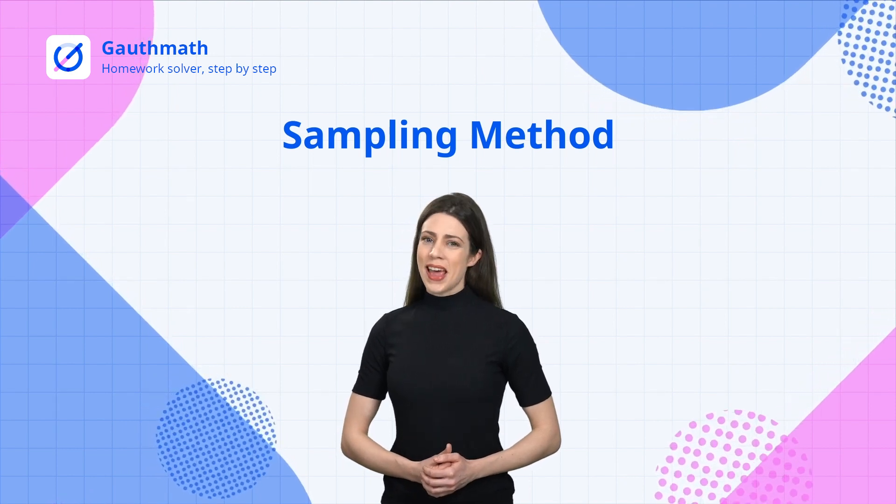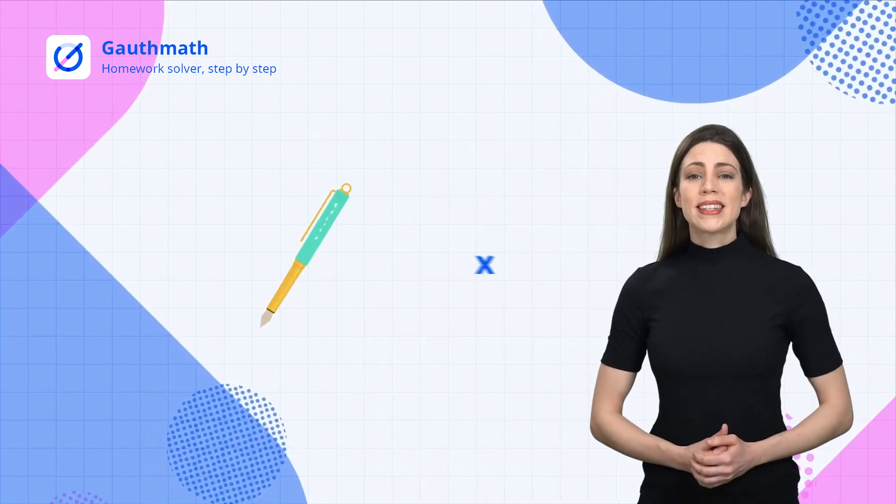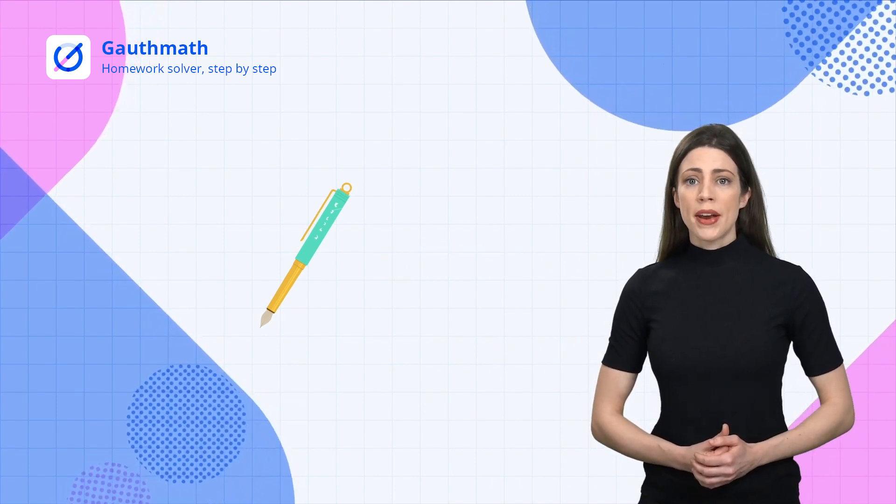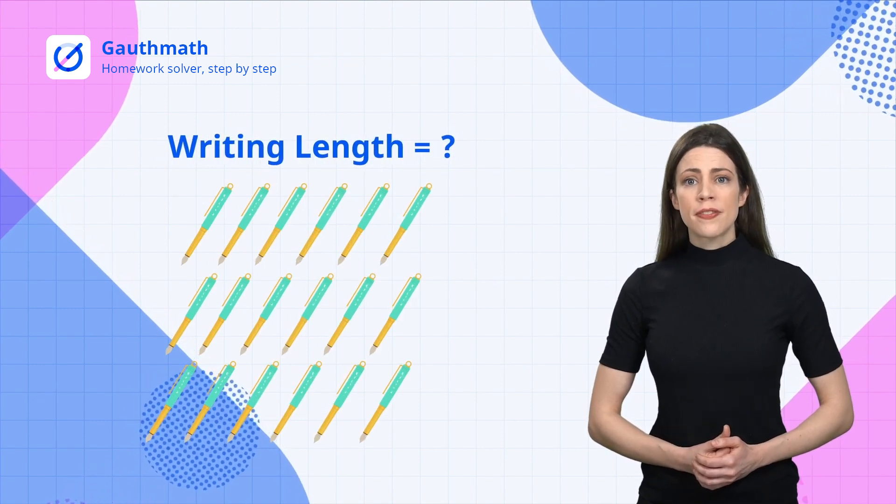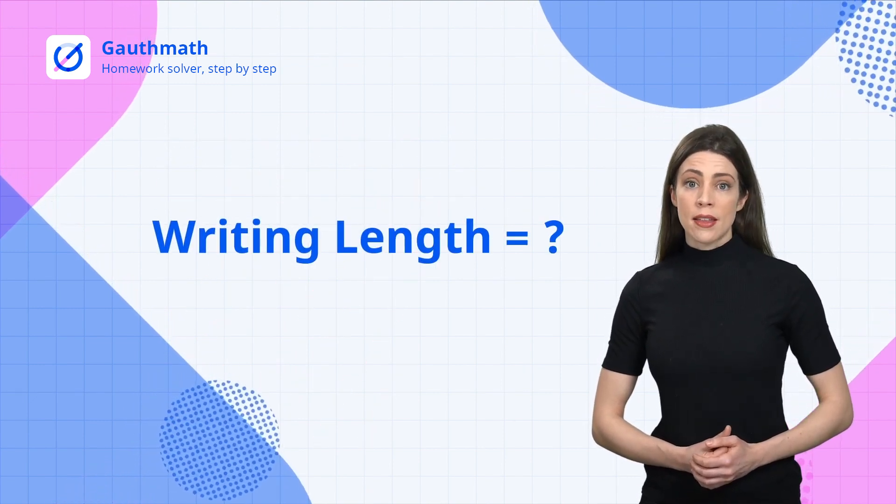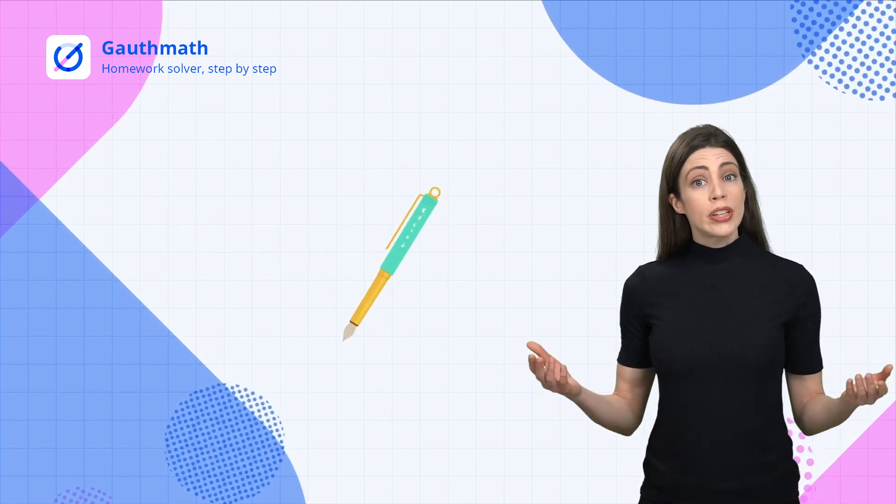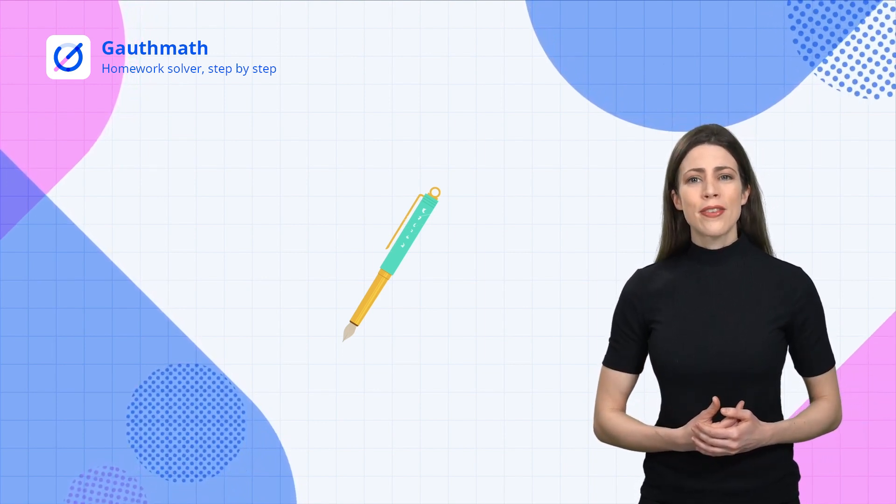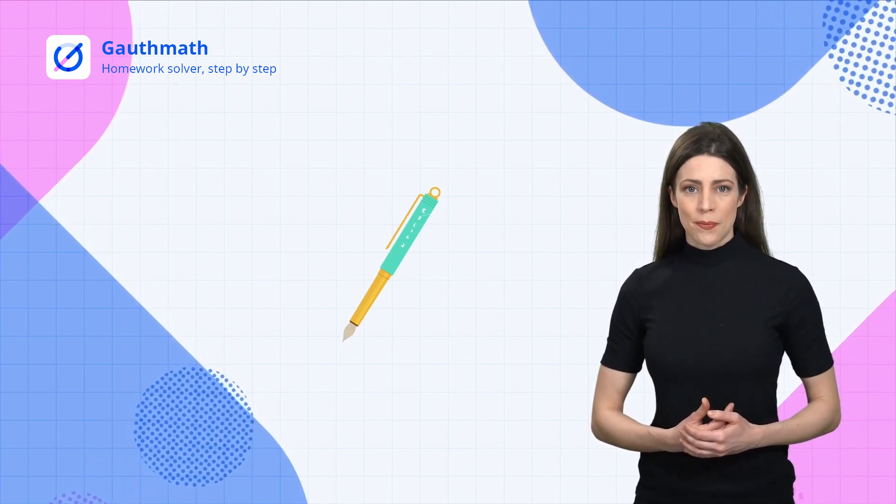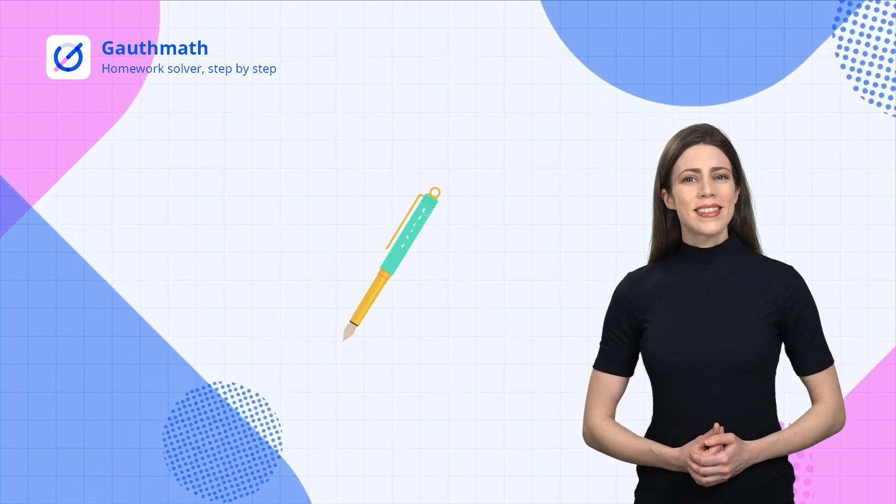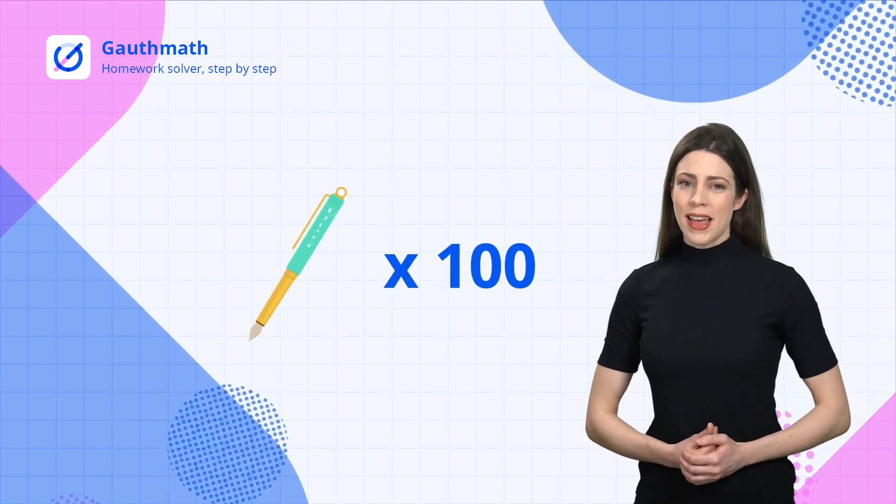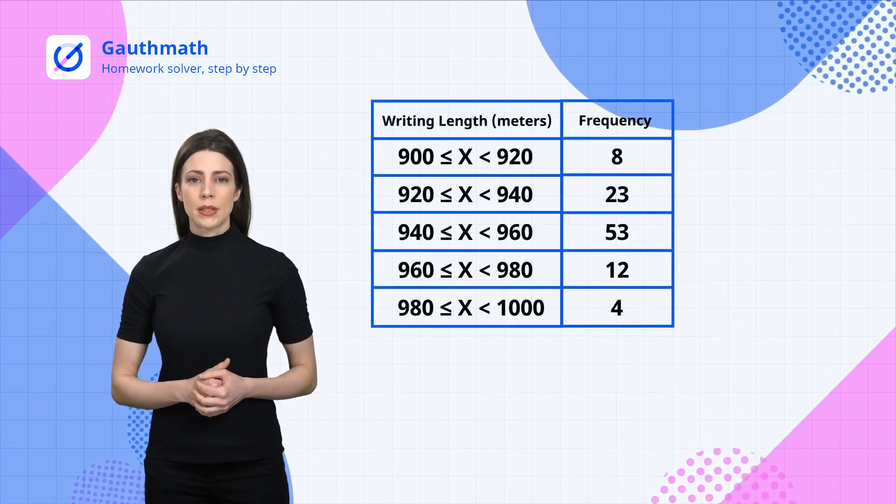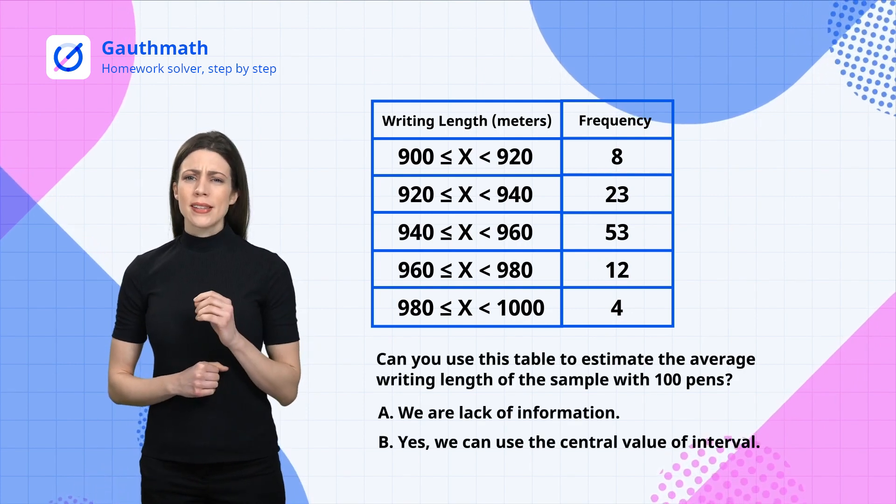Now let's have a try. A factory produced 10,000 pens. In order to label the product specification correctly, they'll need to figure out the average writing length of this batch of pens. We could keep on writing till the pens run out of ink, then we'll know the lifetime of all the pens. Not really, right? Let's take 100 pens as a sample. Here is the testing result obtained from the sample. Can you use this table to estimate the